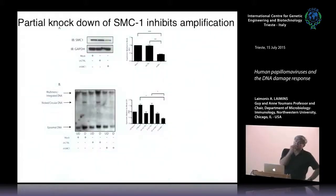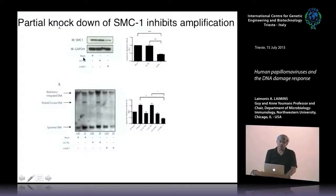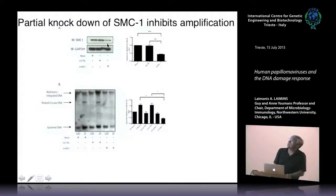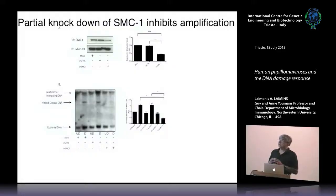SMC1 is an essential protein—cells are not viable if you knock them out completely with shRNAs. In a short-term assay, we knocked down SMC1 levels by 50%. Interestingly, even with just a 50% knockdown, we were able to completely block the ability of these cells to amplify viral genomes upon differentiation. So SMC1 is important for HPV amplification.